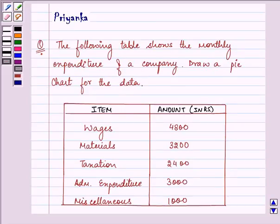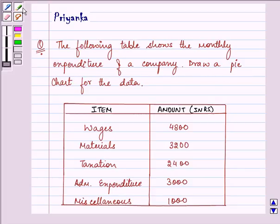Hello and how are you all today? The question says the following table shows the monthly expenditure of a company. Draw a pie chart for the data.